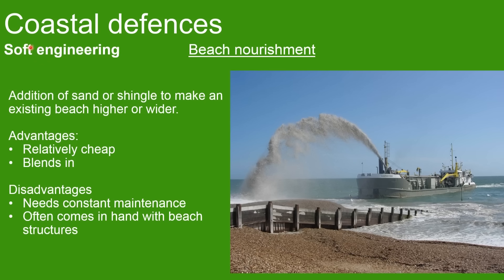Now we're moving on to soft engineering coastal defences. The first is beach nourishment — the addition of sand or shingle to make a beach higher or wider. It's quite cheap because you don't have to pay much for the material, it blends in naturally, and the sand is usually sourced locally, perhaps just 30 miles offshore. However, it needs constant maintenance as you keep having to replenish the supply of shingle to counter the effects of longshore drift, and it needs to work alongside other beach structures such as groynes to hold the sediment in place.